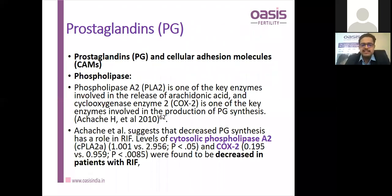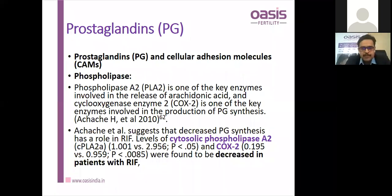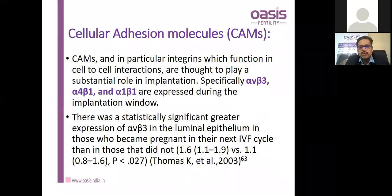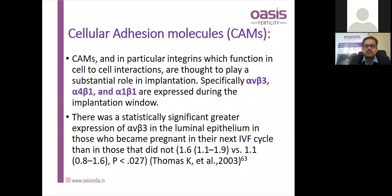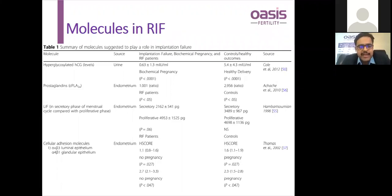Phospholipase A2 and COX-2 are involved in prostaglandin synthesis; their levels were found decreased in RIF patients. Cellular adhesion molecules (CAMs) function in cellular interaction, invasion, and implantation. Specifically, alpha-v-beta-3 integrin was studied; Thomas et al. in 2003 showed greater levels of alpha-v-beta-3 in the luminal epithelium in successful pregnancies versus missed abortions. In summary, hyperglycosylated HCG, prostaglandins, leukemia inhibitory factor, and CAMs have all been studied in RIF.